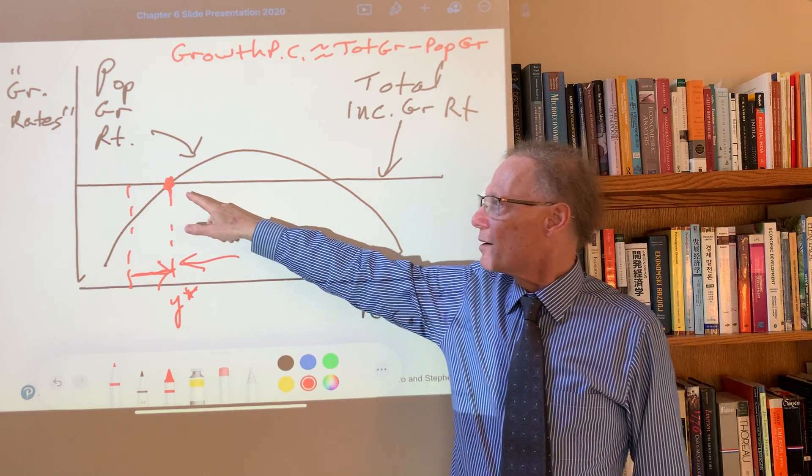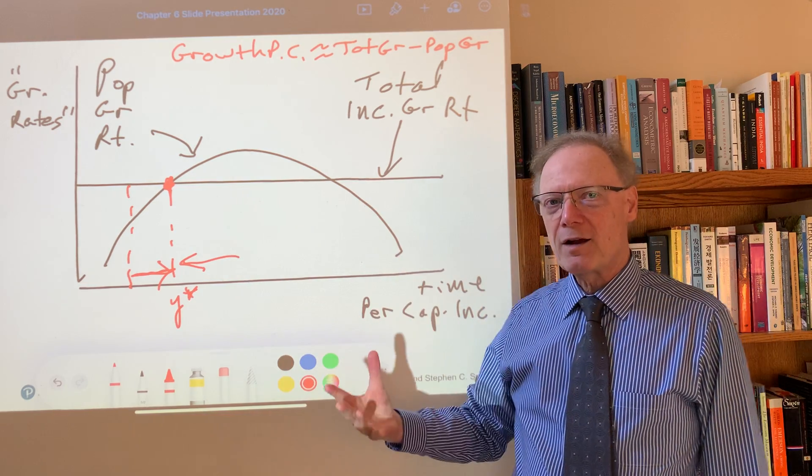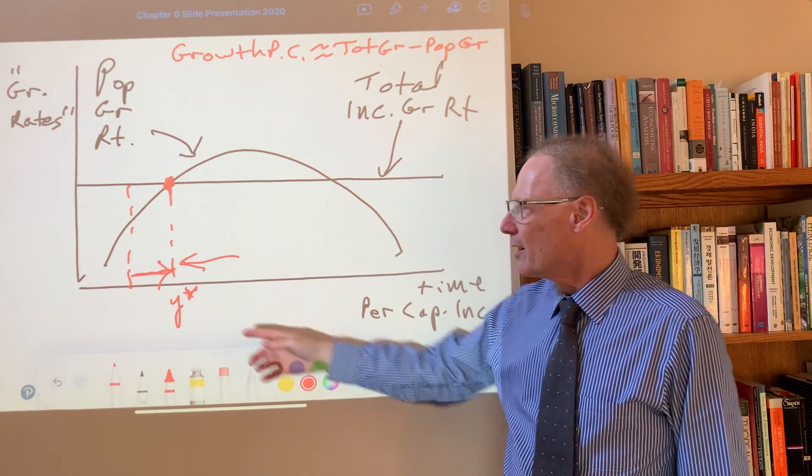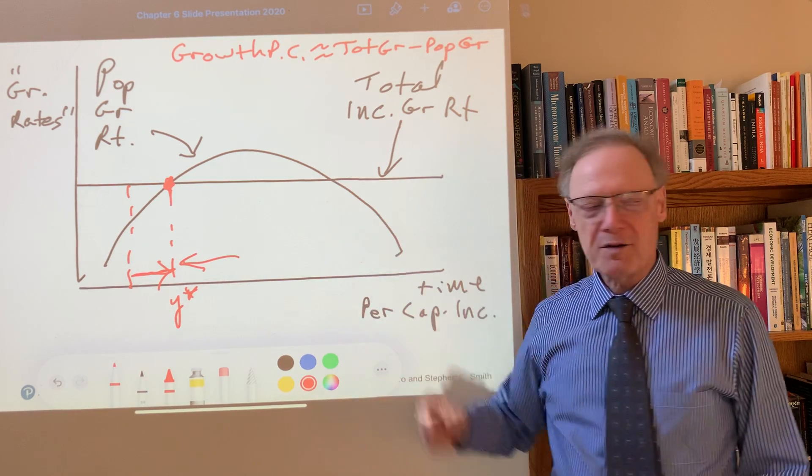So this is a dangerous possibility, you could say. There's a sort of analog to a big push here. If somehow per capita income could reach this point, this would not be an equilibrium.